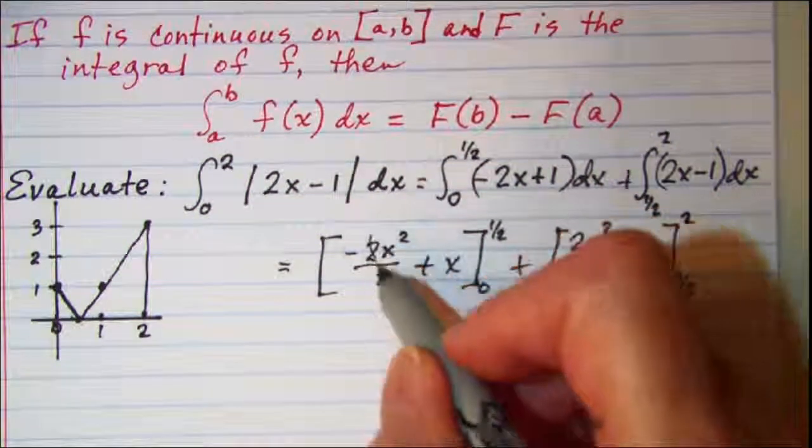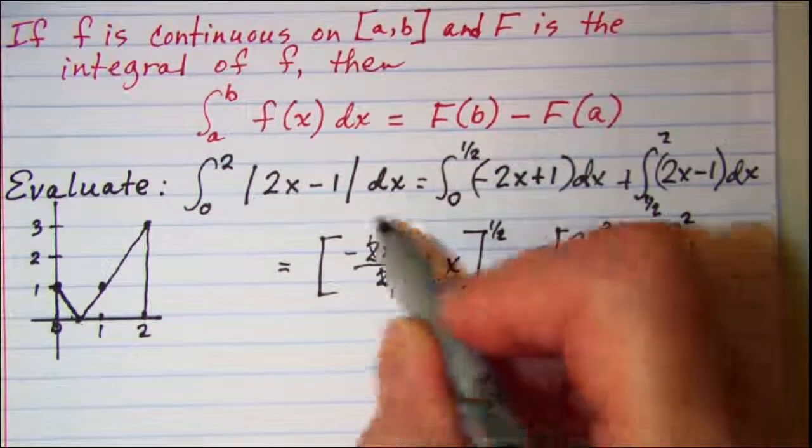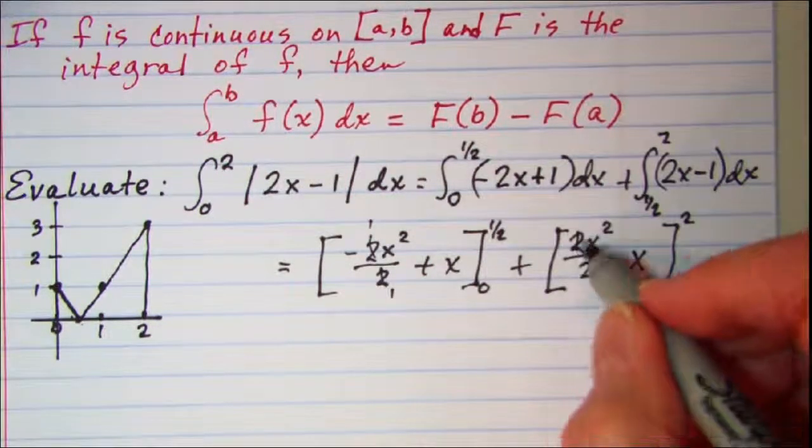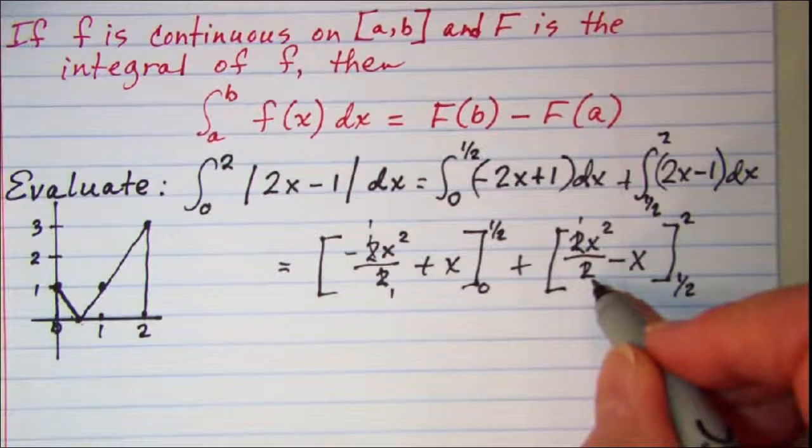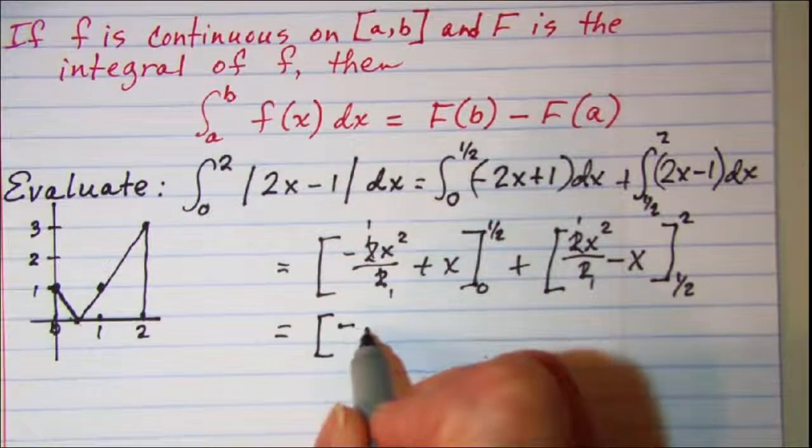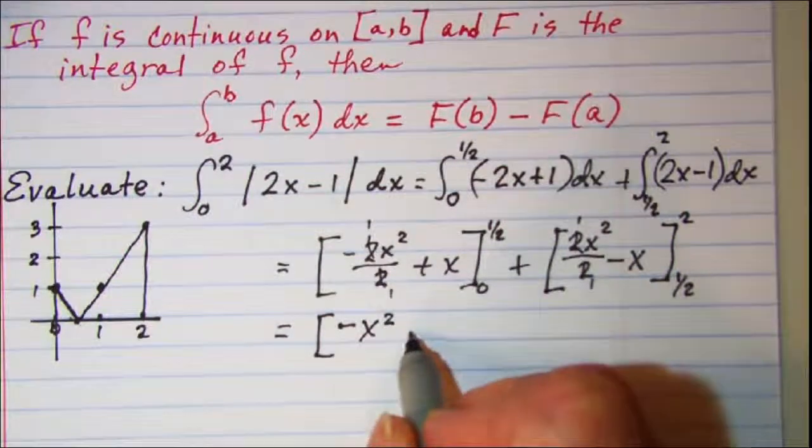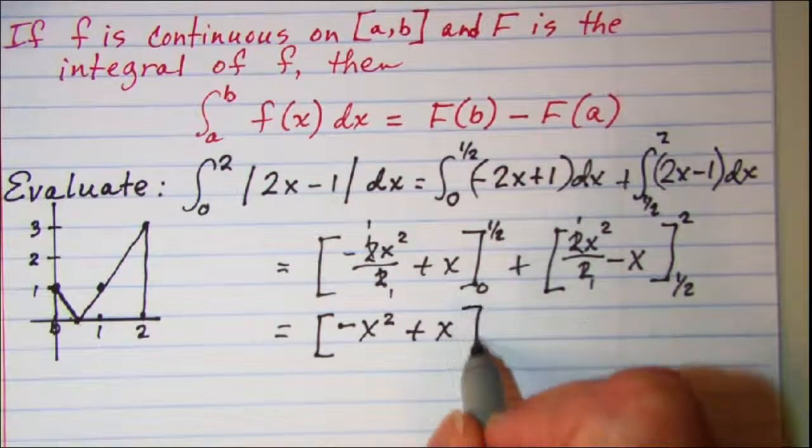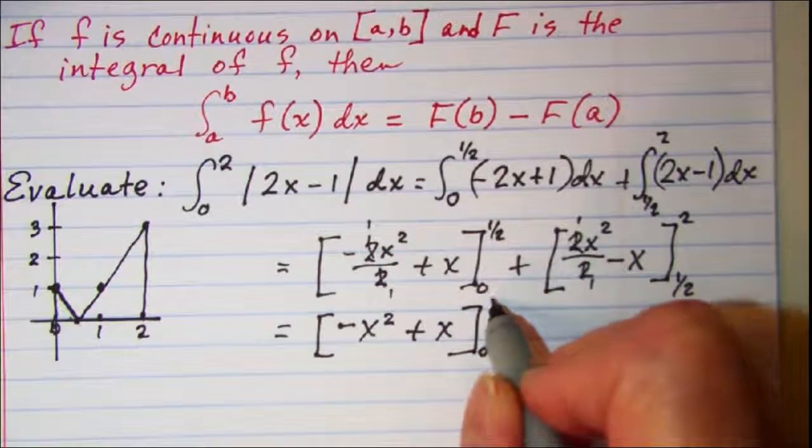I'm going to cancel the factors of 2 out of both of these to simplify my work. So I am evaluating negative x squared plus x from 0 to 1/2, and then this one is x squared minus x evaluated from 1/2 to 2.